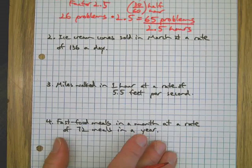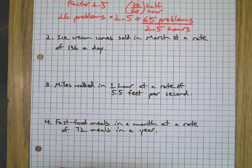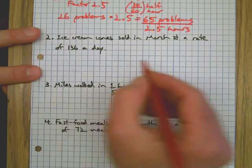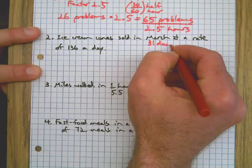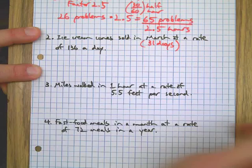Next problem. If that went too fast, back it up and pause it. Ice cream cones sold in the month of March at a rate of 136 per day. By the way, March has 31 days, in case you were wondering.